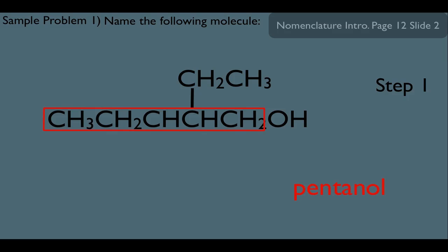That brings us to step two here. In this case, we'd want to number from right to left to get our low substituent numbers. That's putting the OH on carbon-1 and that ethyl there on carbon-2.